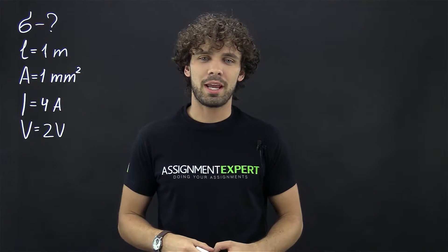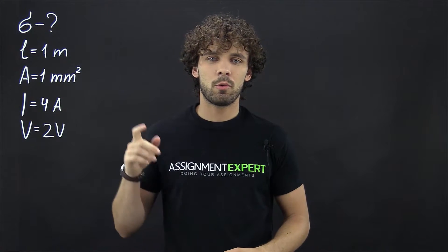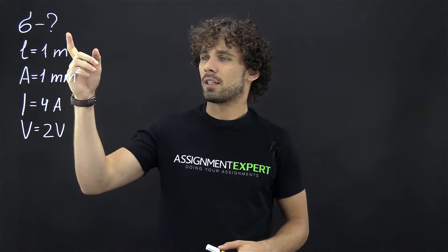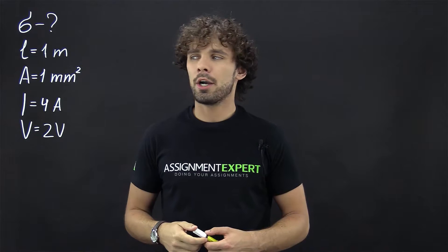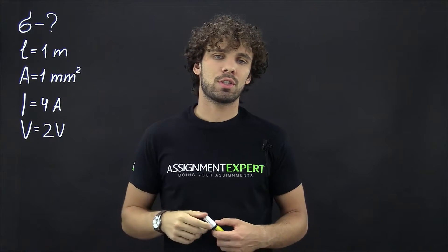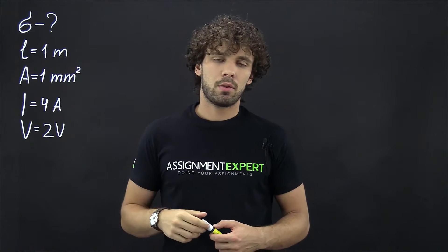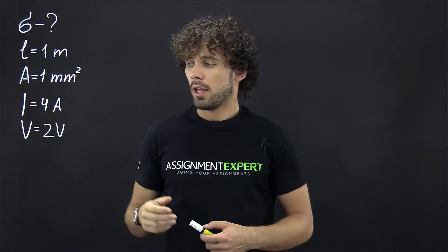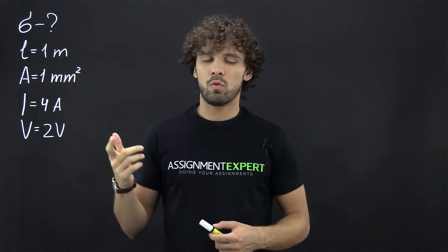Hi, this is Assignment Expert and today we're dealing with this task. We need to find conductivity of a nichrome wire which is one meter long and has a cross section one millimeter squared. The current passing through the wire is 4 ampere and the voltage is 2 volts.